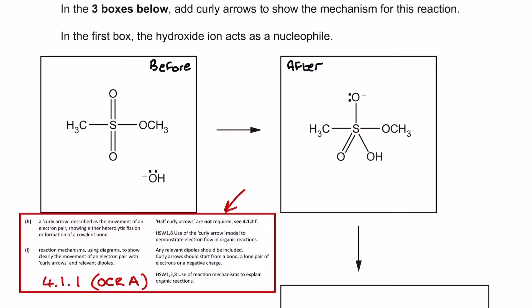For example, here, we are told that the hydroxide ion, which is just down here, is acting as a nucleophile. And we know that a nucleophile is, by definition, an electron pair donor.